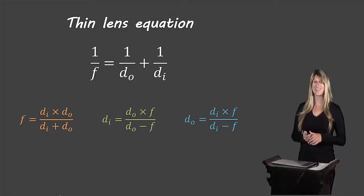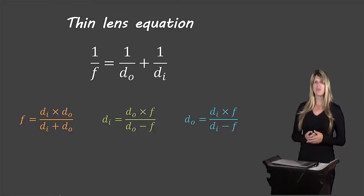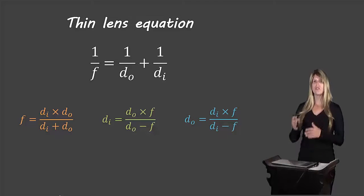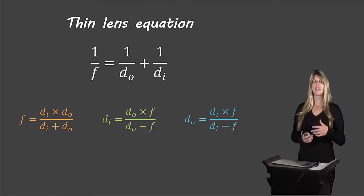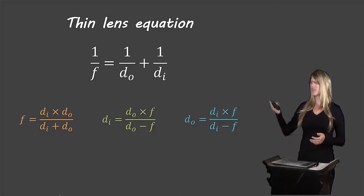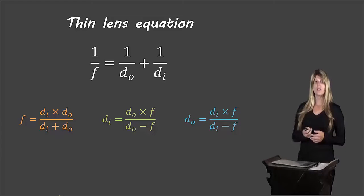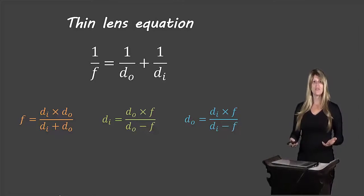Let's take a look at the equation. It should look similar to the mirror equation: 1 over F equals 1 over DO plus 1 over DI. I'm not going to go through the steps to rearrange the equation to isolate each variable, as this is something you should have learned in math class. However, if you struggled with this, come ask me in class. Alternatively, I've given you three different rearranged versions of the equation in different colors, which you're welcome to memorize, as long as you remember all three in their correct forms.